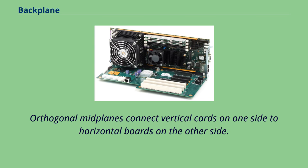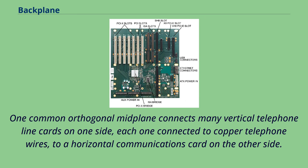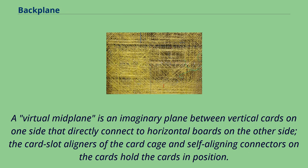Orthogonal midplanes connect vertical cards on one side to horizontal boards on the other side. One common orthogonal midplane connects many vertical telephone line cards on one side, each one connected to copper telephone wires, to a horizontal communications card on the other side. A virtual midplane is an imaginary plane between vertical cards on one side that directly connect to horizontal boards on the other side. The card slot aligners of the card cage and self-aligning connectors on the cards hold the cards in position.